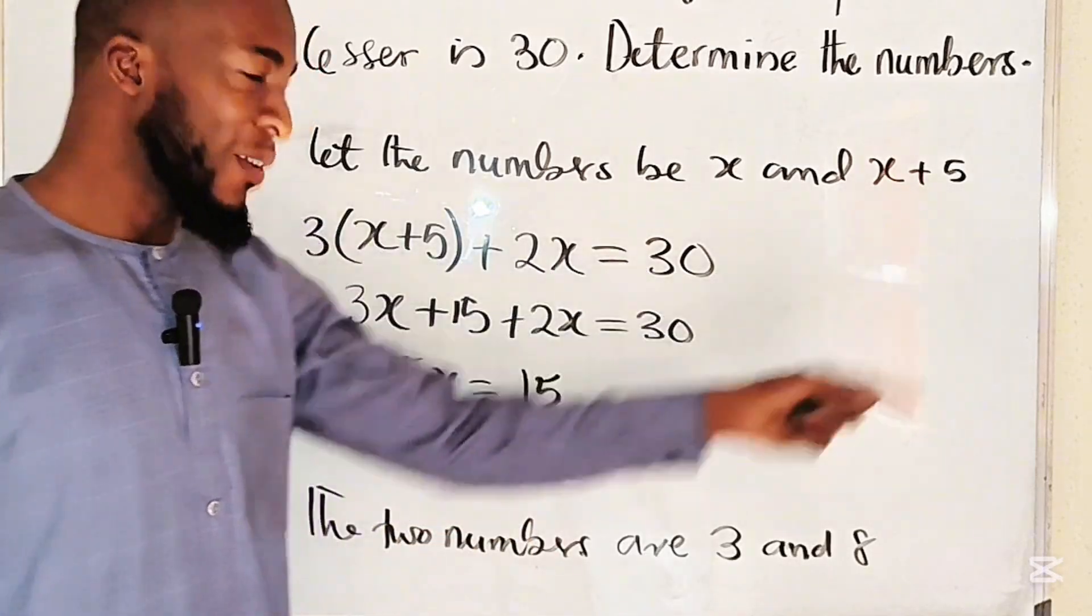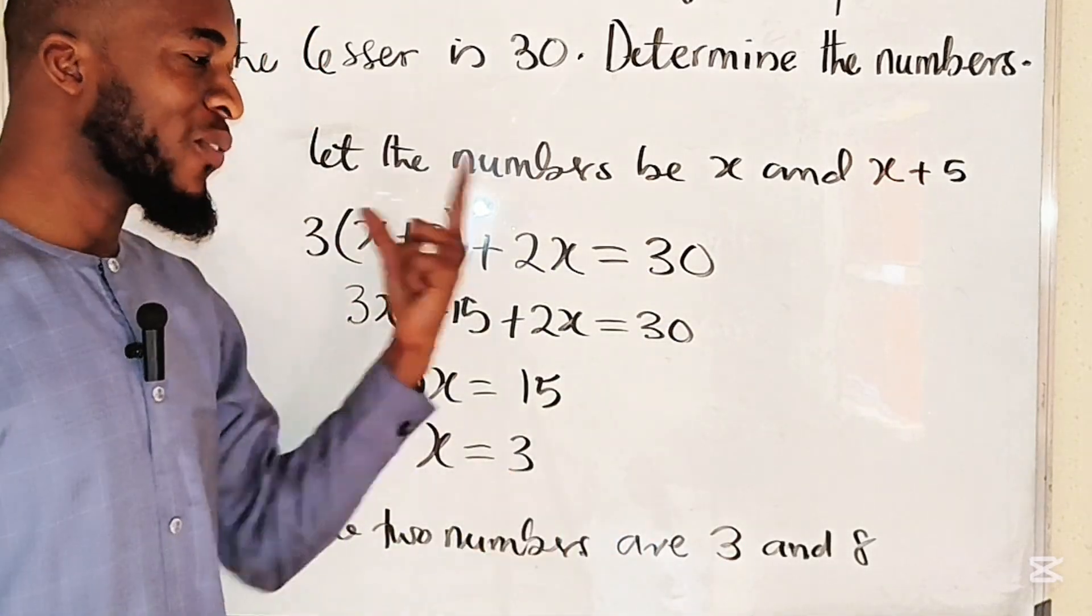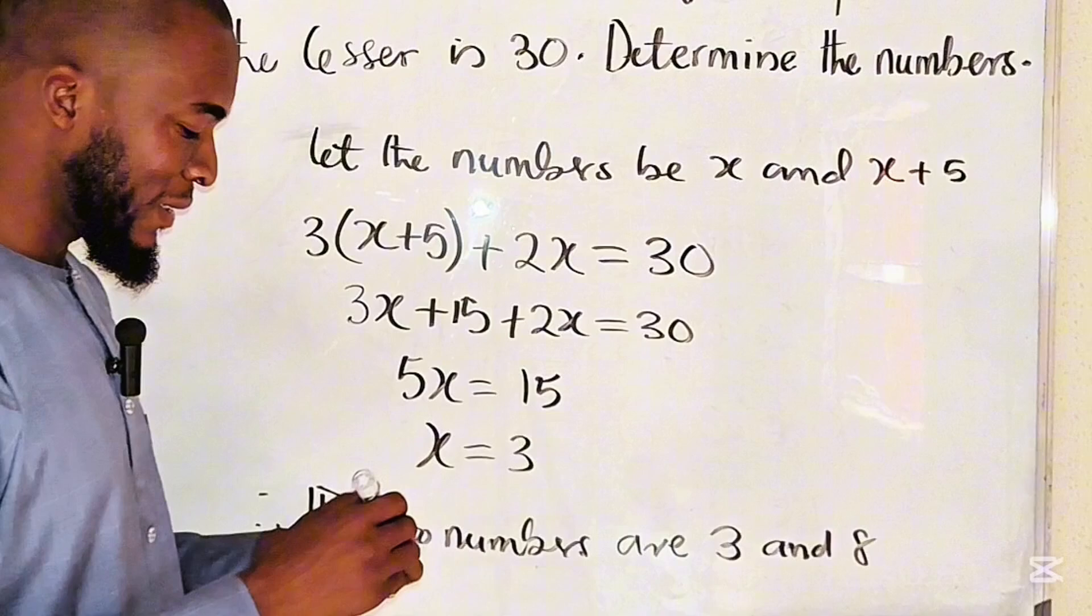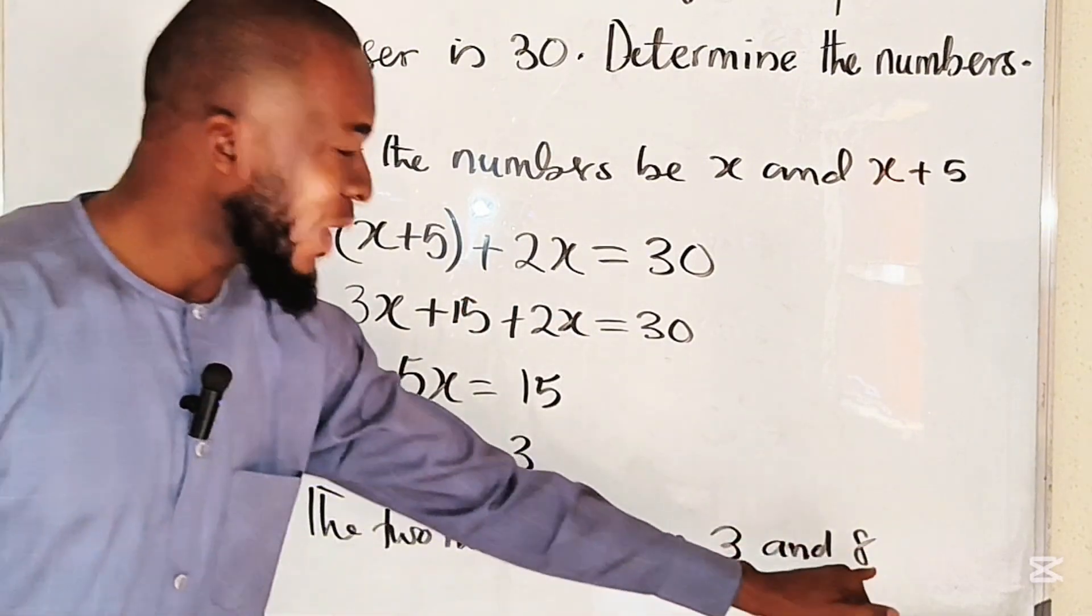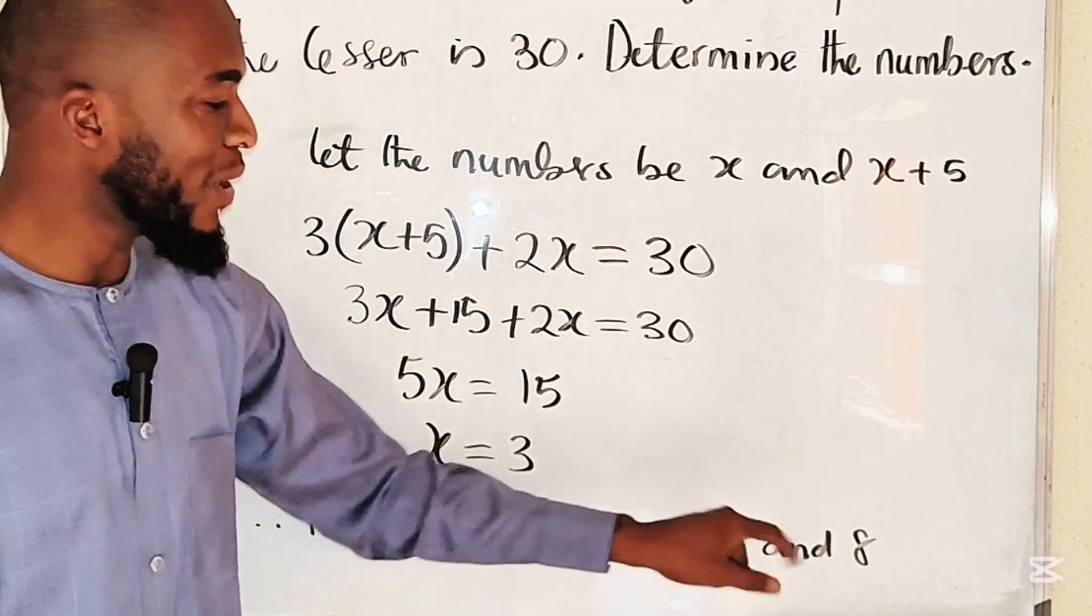If you want to confirm, multiply this by 3, twice this number. This times 3 is 24, this times 2 is 6. 24 plus 6 will give us 30. Simple.